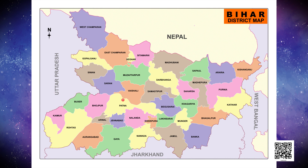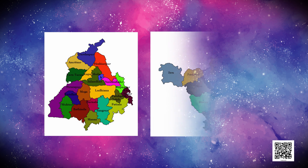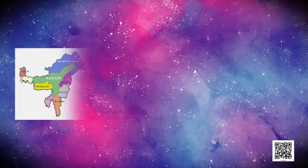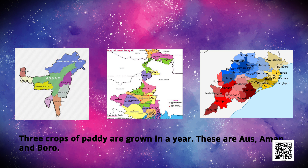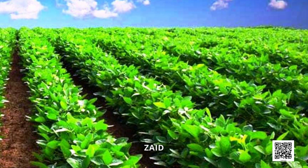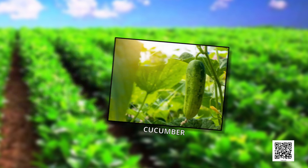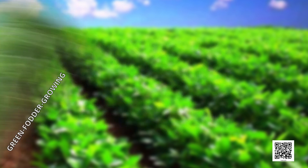Recently, paddy has also become an important crop of Punjab and Haryana. In states like Assam, West Bengal and Odisha, three crops of paddy are grown in a year. These are Aus, Aman and Boro. In between the Rabi and Kharif seasons, there is a short season during the summer, known as the Zaid season. Some of the crops produced during Zaid are watermelon, muskmelon, cucumber, vegetables and fodder crops. Sugarcane takes almost a year to grow.